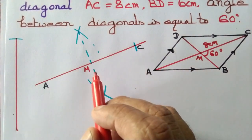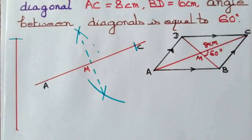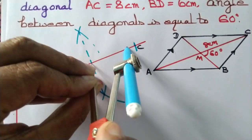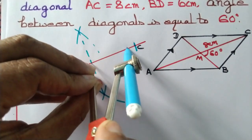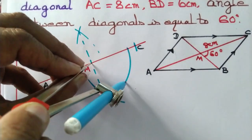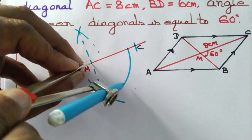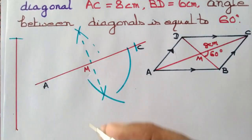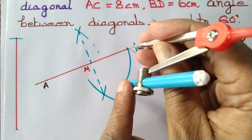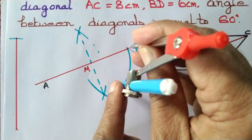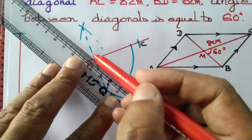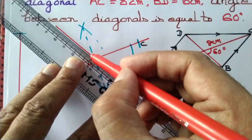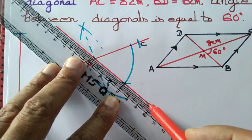Next, we need to draw an angle that measures 60 degrees. To do so, we draw a circular arc from point M. Without changing the radius, we draw another circular arc, then join the intersection point of those two circular arcs with point M to obtain the 60-degree angle.